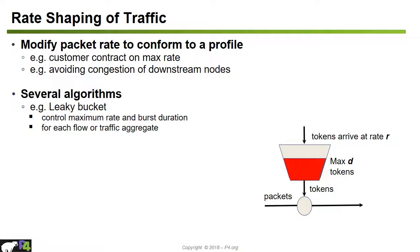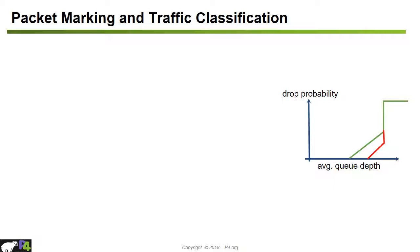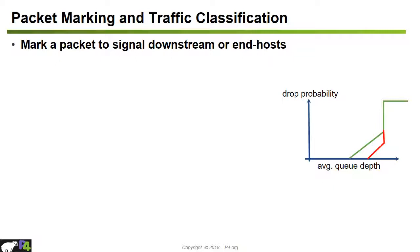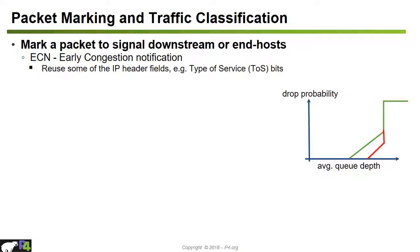When packets arrive, we can mark them to signal to downstream nodes or end hosts that congestion is building up. For example, with ECN (Early Congestion Notification), we reuse some IP header fields — such as the IP type-of-service bits — to signal to the downstream or end host if congestion is building up. We can combine this with buffer state information and RED information.